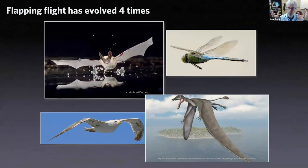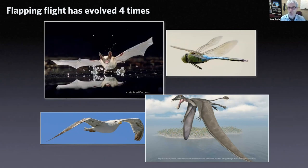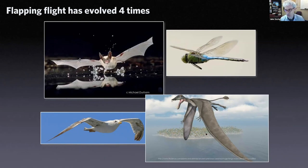Let me give an overview of flight. Active flapping flight has evolved four times: insects, bats, birds, and pterosaurs. Pterosaurs are extinct — they lived in the same time period as dinosaurs, but they're actually not dinosaurs.